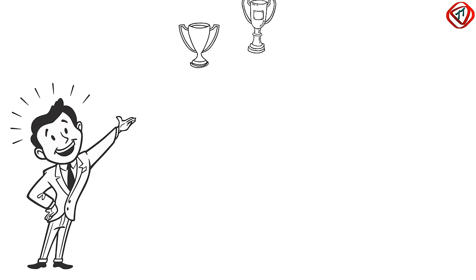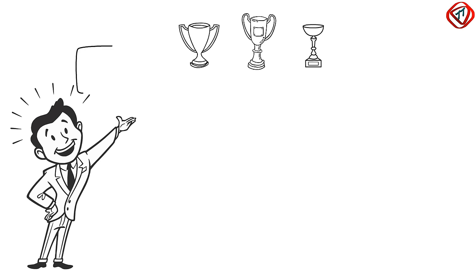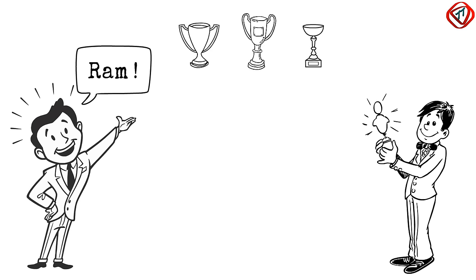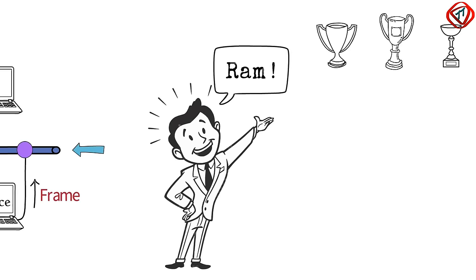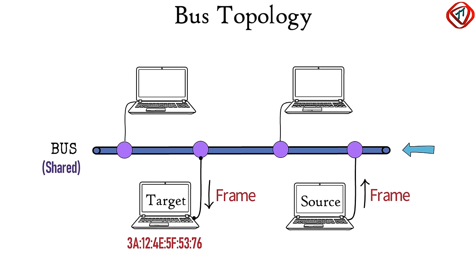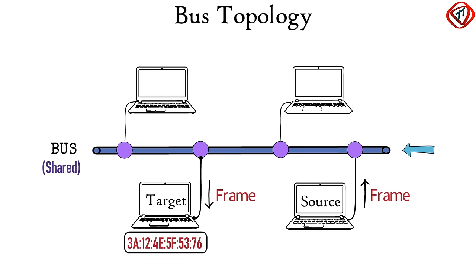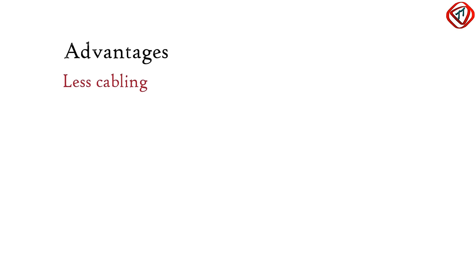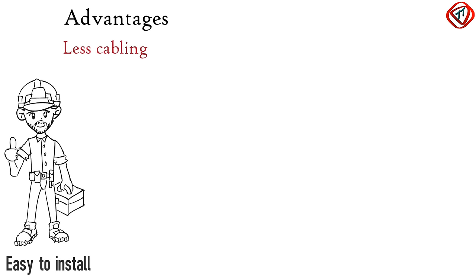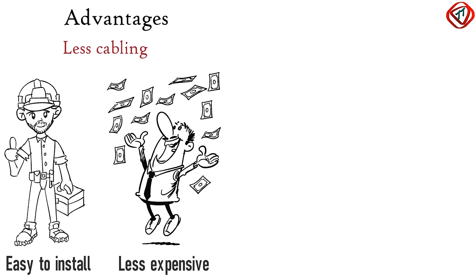Others reject the frame by checking the destination MAC address in the received frame. Suppose you are distributing prizes as per the results of a competition — you asked Ram to come on stage for his reward, so only Ram will collect the prize. Same is the case in bus topology: only that computer accepts the frame to whom it is addressed. Since bus topology requires less cabling, it is easy to install and less expensive to implement compared to other topologies.